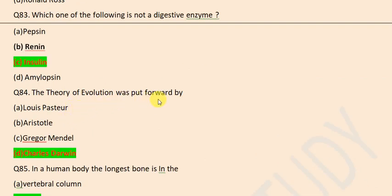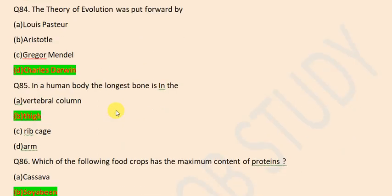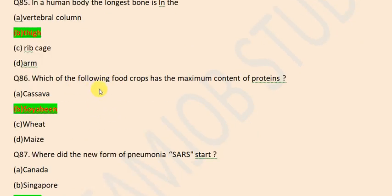The theory of evolution was put forward by Charles Darwin. In a human body, the longest bone is the thigh bone. Which of the following food crops has maximum content of proteins? Soya beans.